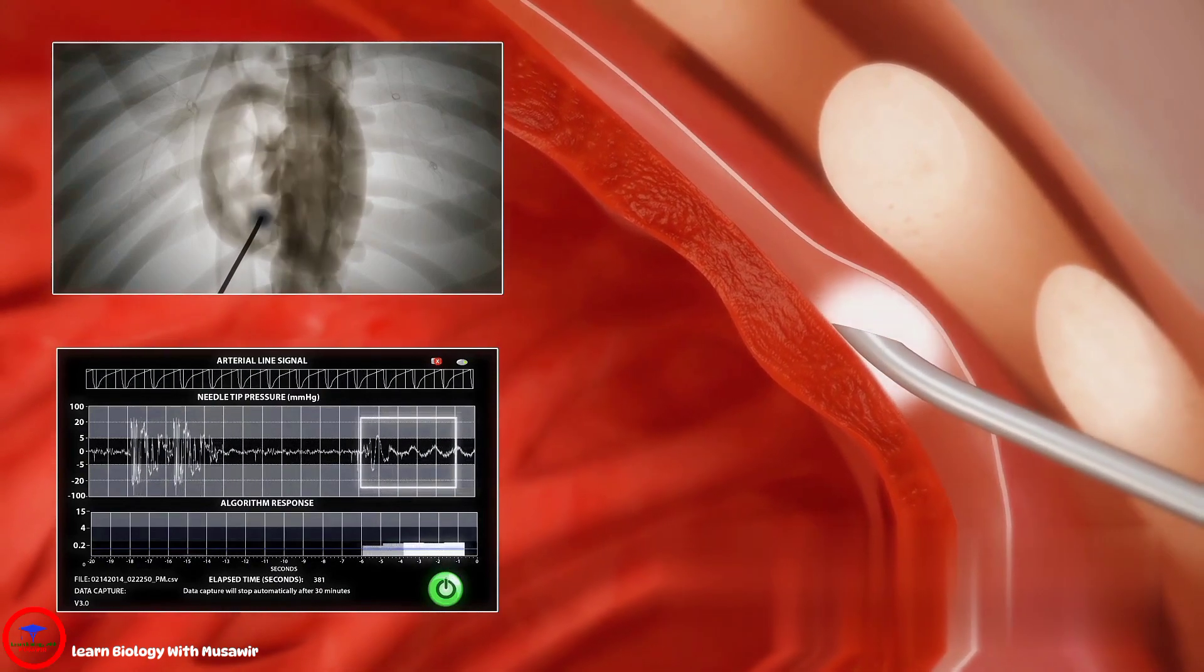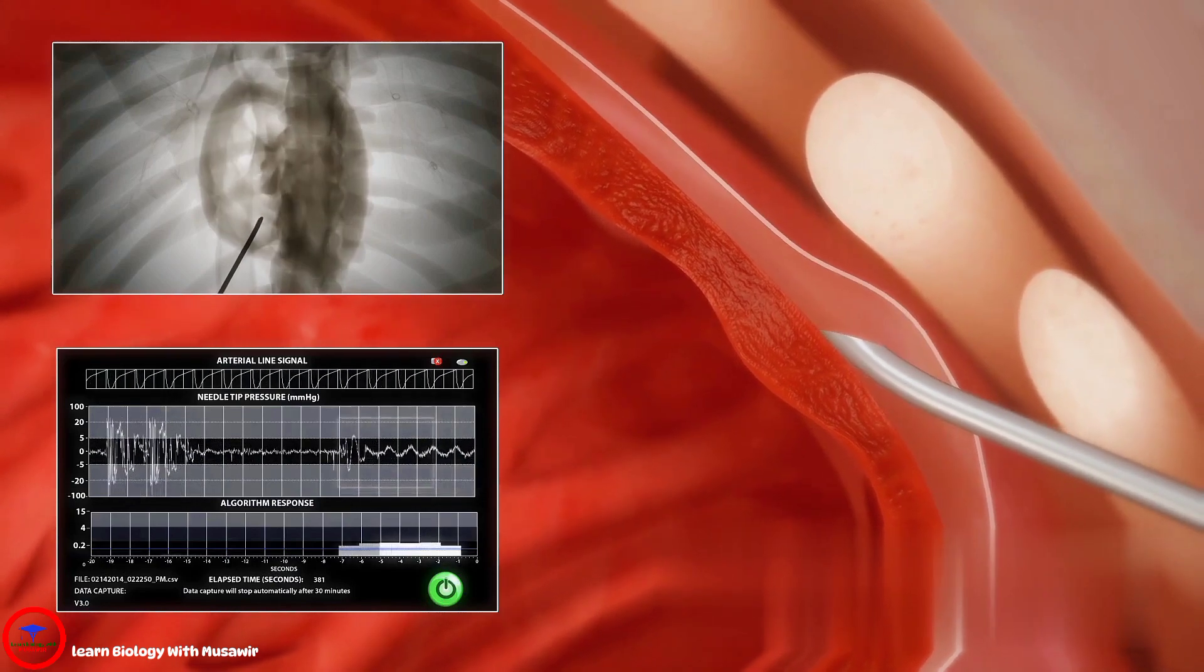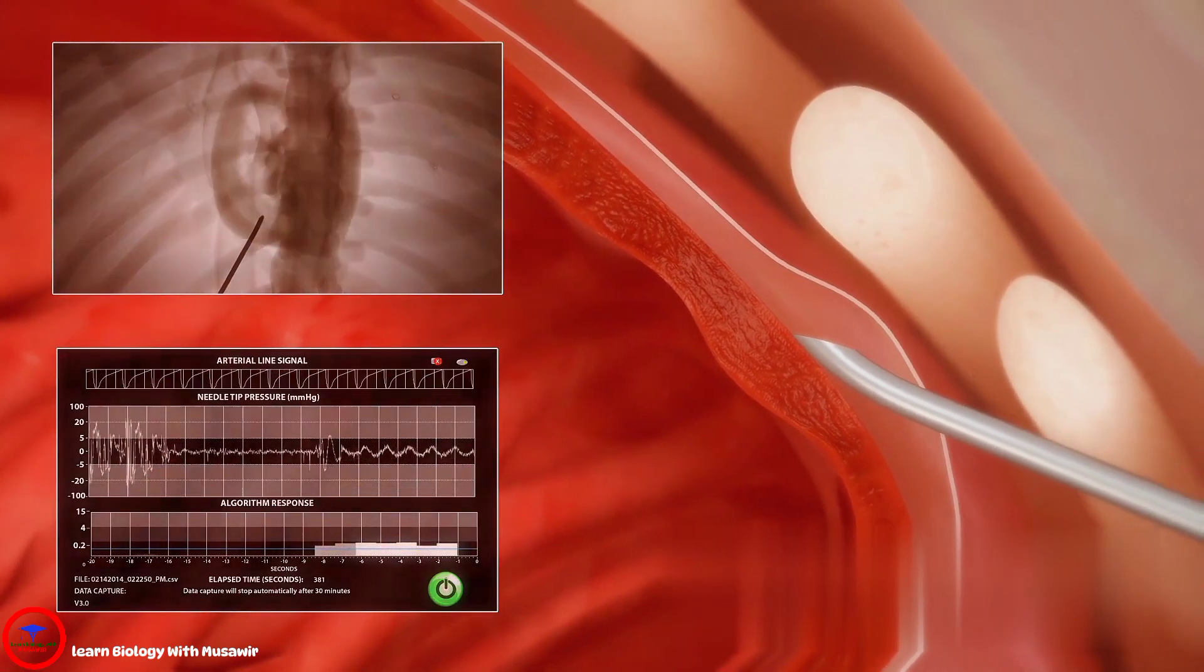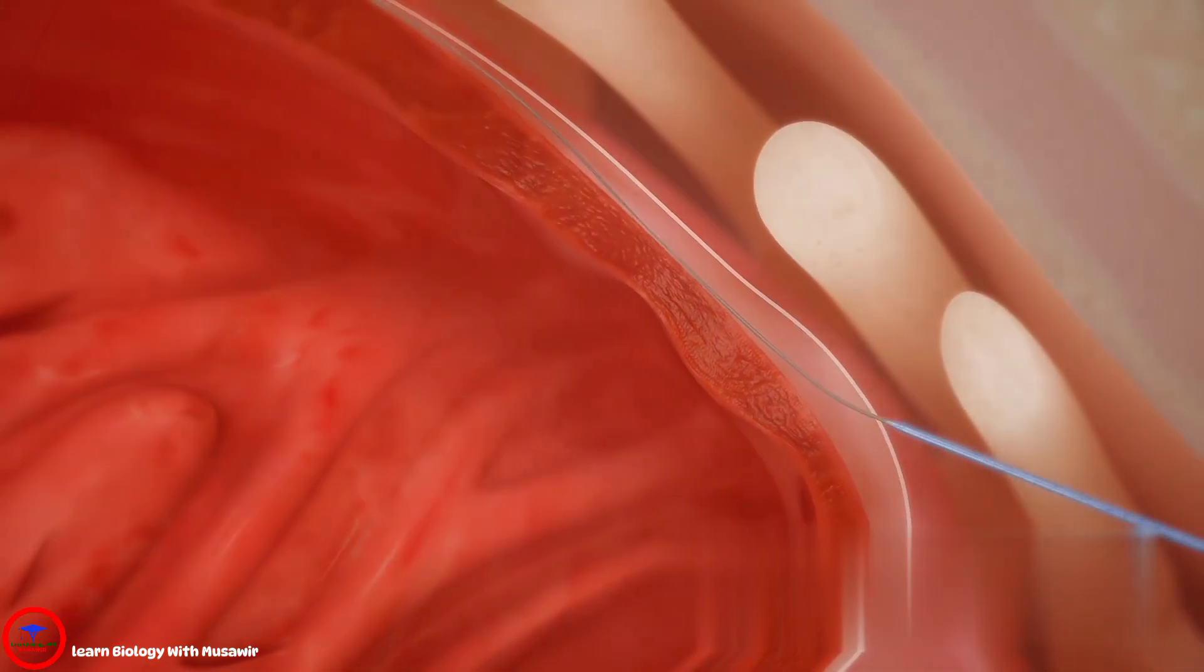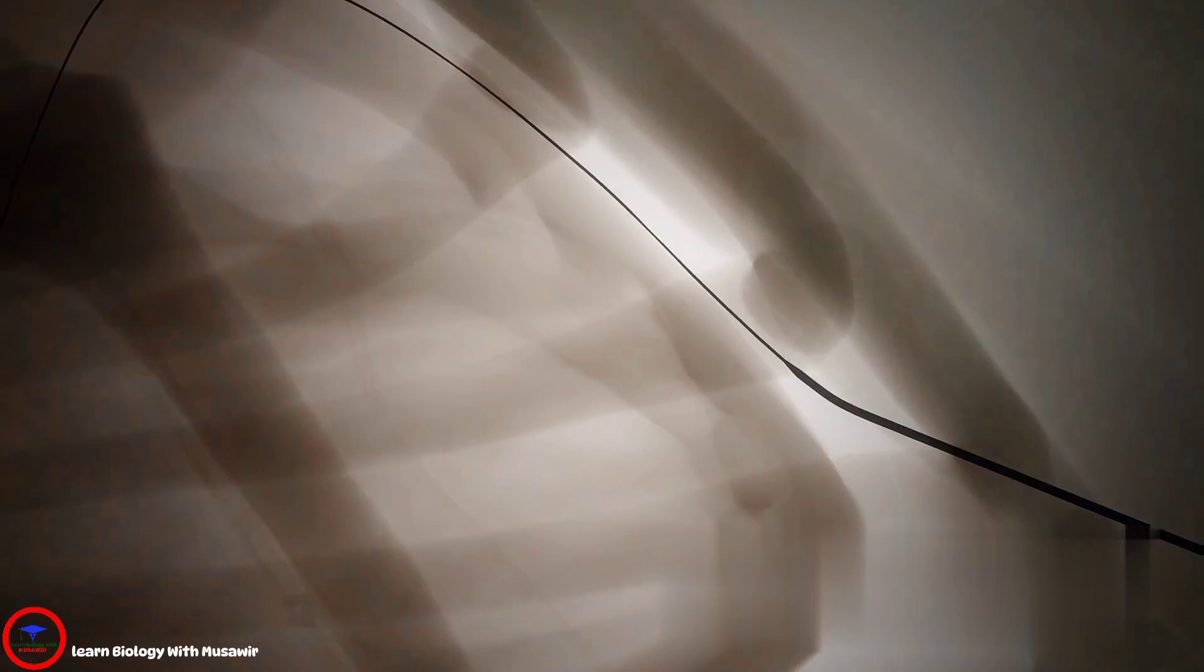Access is confirmed with a second puff of contrast under fluoroscopy. A guide wire is extended into the pericardial space, the needle is removed, and a sheath is introduced to allow epicardial access.